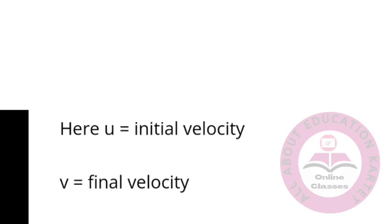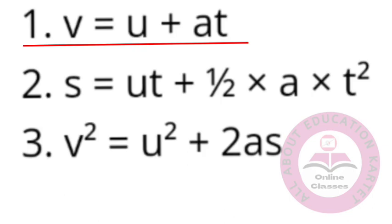This is final velocity, this is initial velocity, this is acceleration. The formula is V equals U plus AT. You will use the formula. S equals UT plus half into A into T square.